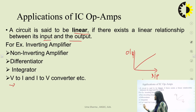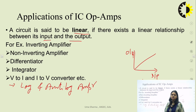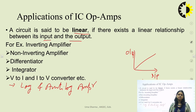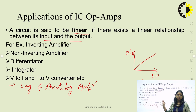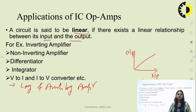Non-linear applications include log and anti-log amplifiers. There are also applications like peak detector and sample-and-hold circuit where Op-Amp implements non-linear behavior. Linear relation between input and output means linear applications; non-linear relation means non-linear applications of Op-Amp.